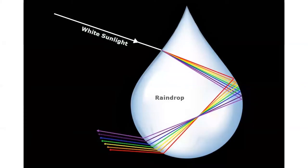The same thing happens with the rainbows we see in nature. Essentially what happens is that white light is coming in, being refracted once it goes into a raindrop, and then it's reflected as it moves throughout that raindrop until it comes out at the bottom. And that's what causes the rainbows we see in nature.